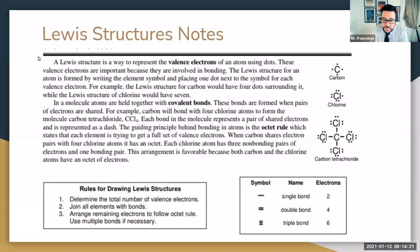We're going to talk about how we draw and represent Lewis structures. Lewis structures are a way to represent the valence electrons of an atom using dots. We'll review valence electrons in a second, but remember these are the outside electrons. These electrons are important because they're involved in bonding — when two atoms combine together, the ones on the outside link together to make bonds that hold the atoms together.